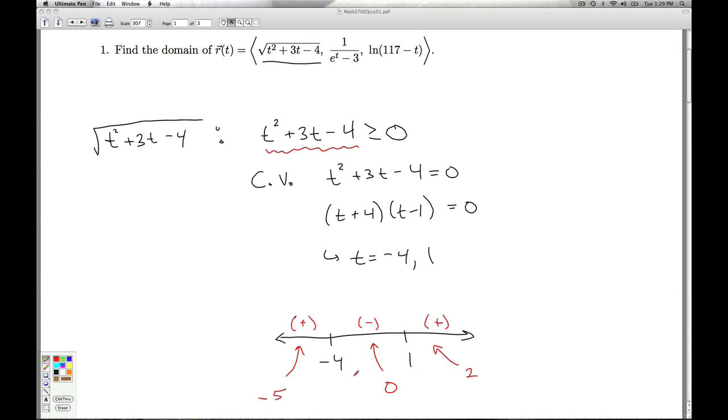And so if you remember back to Calc 1, the intermediate value theorem guarantees that no matter what test numbers we pick in these intervals, we're always going to get the same sign pattern: positive, negative, positive.